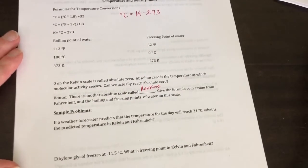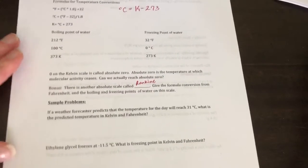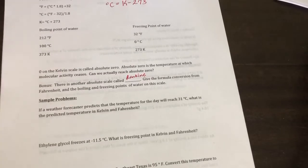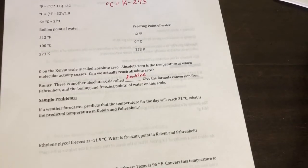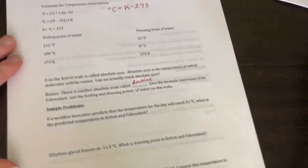Okay, first example problem. Also, if you don't have a calculator, you need to get a calculator starting now. Okay, so if a weather forecaster predicts that the temperature for the day will reach 31 degrees Celsius, what is the predicted temperature in Kelvin and Fahrenheit?